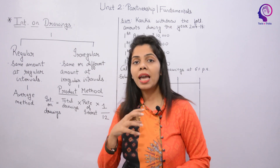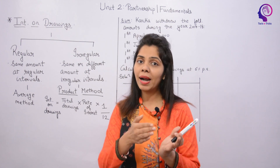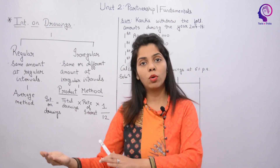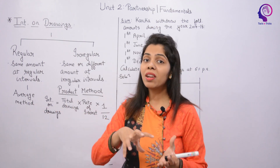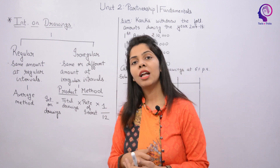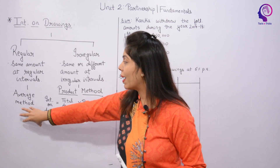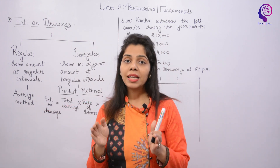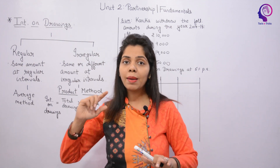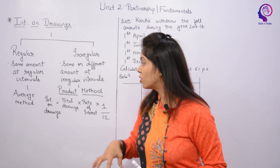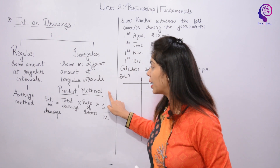So, we look at the question and see the pattern of withdrawal. If it is withdrawing regularly, that is Regular Drawings. If it is withdrawing irregularly, that is Irregular Drawings. The method we use for Regular Drawings is called the Average Method — I will cover that in the next lecture. Today, I am going to discuss the Irregular Drawings method, which is called the Product Method.